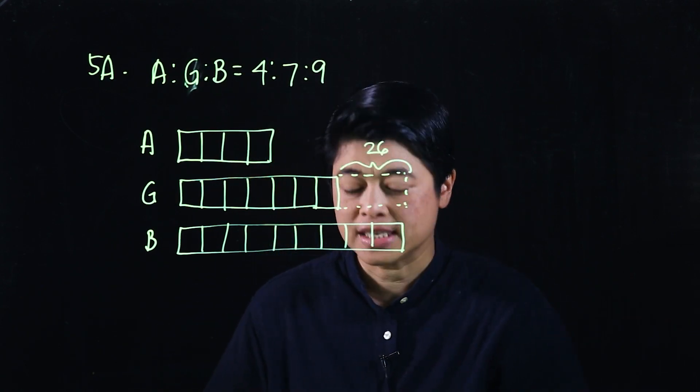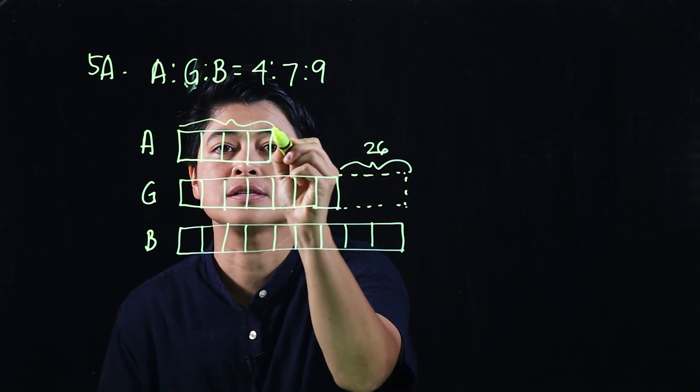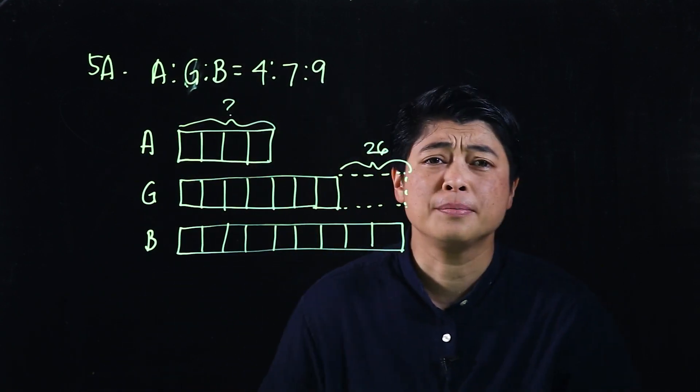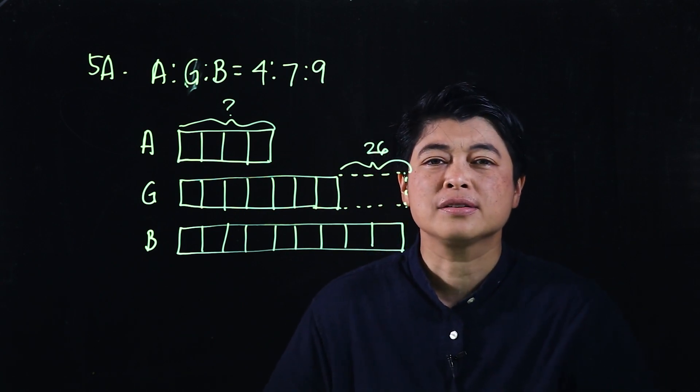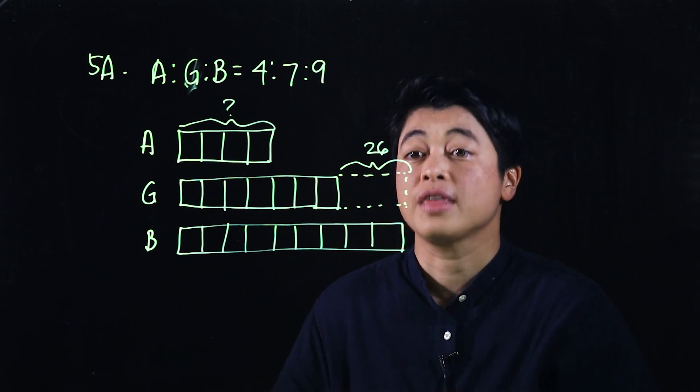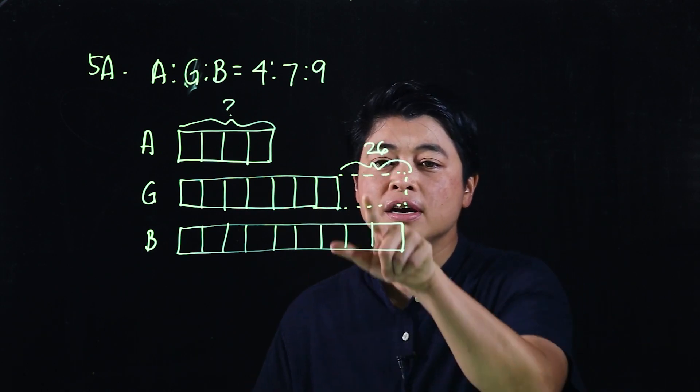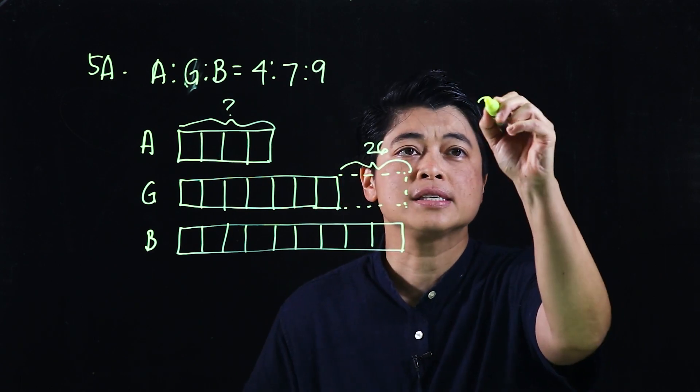The question is how many adults are there in the carnival, so that means this is what we want. If you didn't draw this, it's very hard to solve. So that's the beauty of the bar model, it really helps you think. Which means if you look at this, 26 is equal to 2 boxes, so which means 2 units is equal to 26.